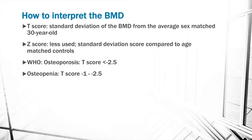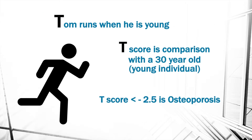Bone mineral density is interpreted using the T-score, which is the standard deviation of BMD from the average sex-matched 30-year-old. The Z-score is less used and is a standard deviation compared to age-matched controls. This can be remembered using the mnemonic 'Tom Runs When He Is Young' — T-score compares a patient's BMD with a 30-year-old. A T-score of less than minus 2.5 is the definition of osteoporosis.